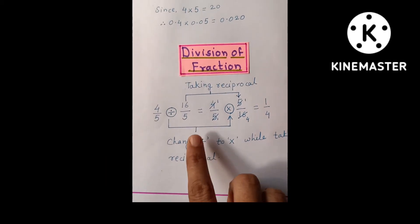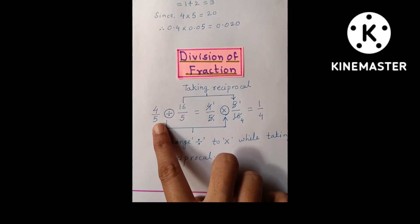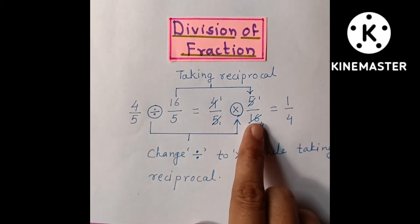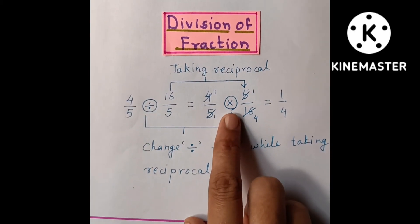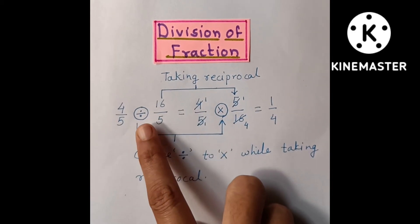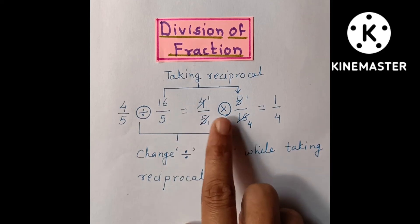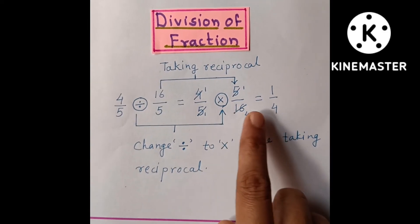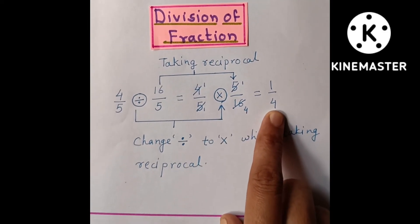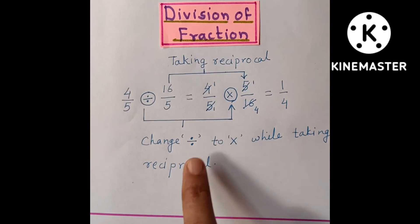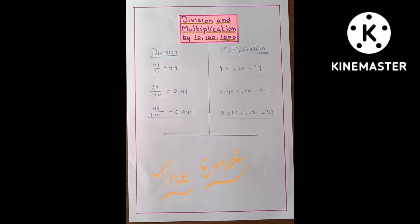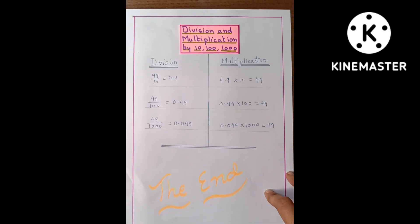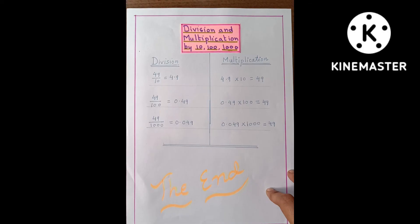Then division of fraction. Division will change into multiplication while taking the reciprocal. So here division changes into multiplication and the product is 1 by 54.